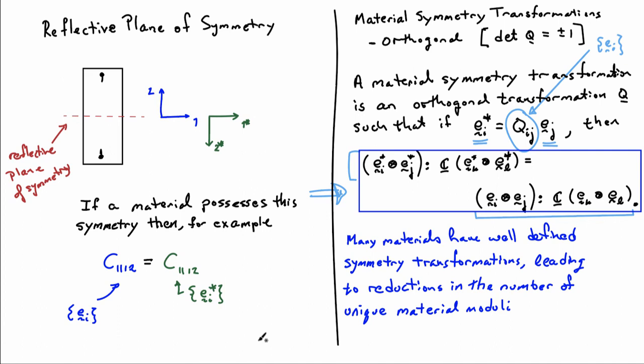Without any material symmetry transformations, there are 21 independent, unique elastic moduli — for C_IJKL with minor and major symmetries combined together giving 21 constants. We call that the triclinic case. There are materials that are triclinic, but most materials have some type of material symmetry and so end up with fewer than 21 constants.